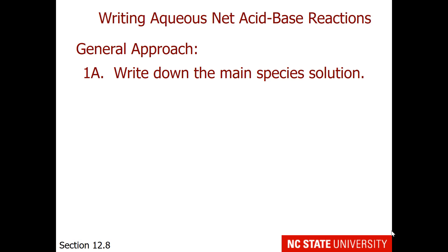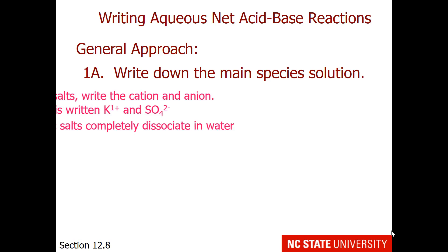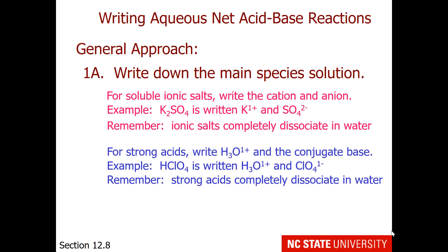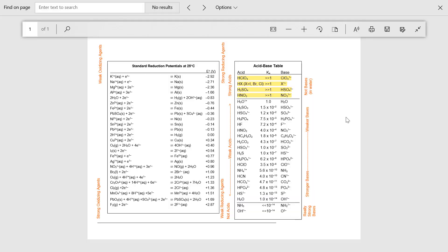Step 1 is to write down the main species in solution. For ionic salts that are soluble, we write the cation and the anion. For example, potassium sulfate would separate into potassium ion and sulfate anion. For our six strong acids, when in aqueous solution, they produce hydronium and the conjugate base. For example, an aqueous solution of perchloric acid contains hydronium and perchlorate, because strong acids completely dissociate in water. These would be the six strong acids at the upper left of the acid-base table.